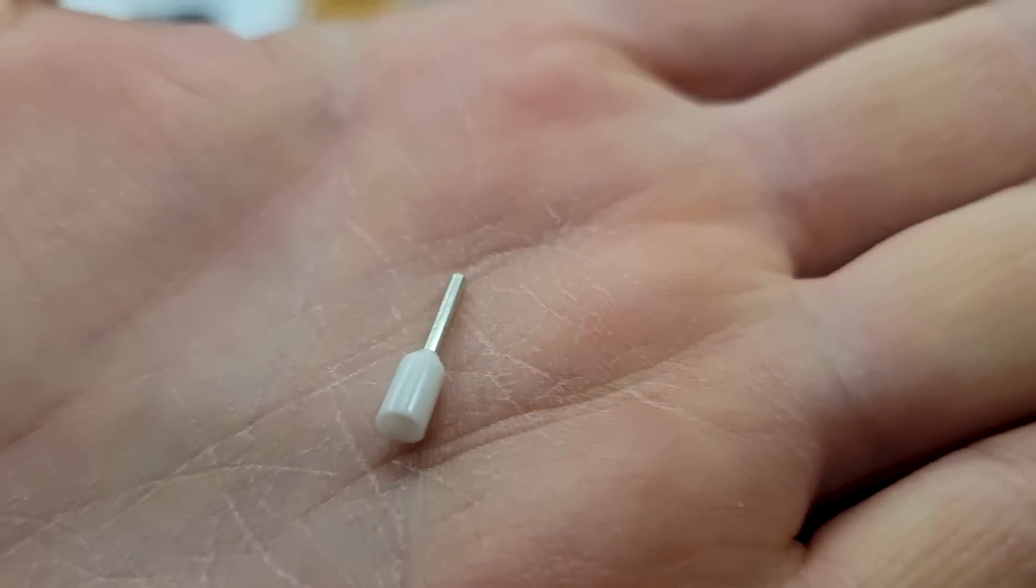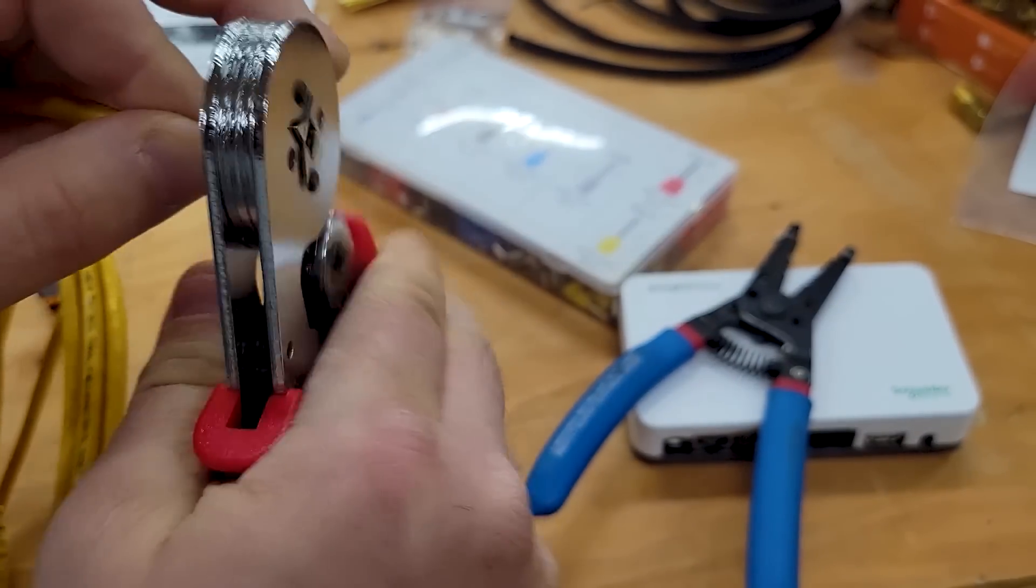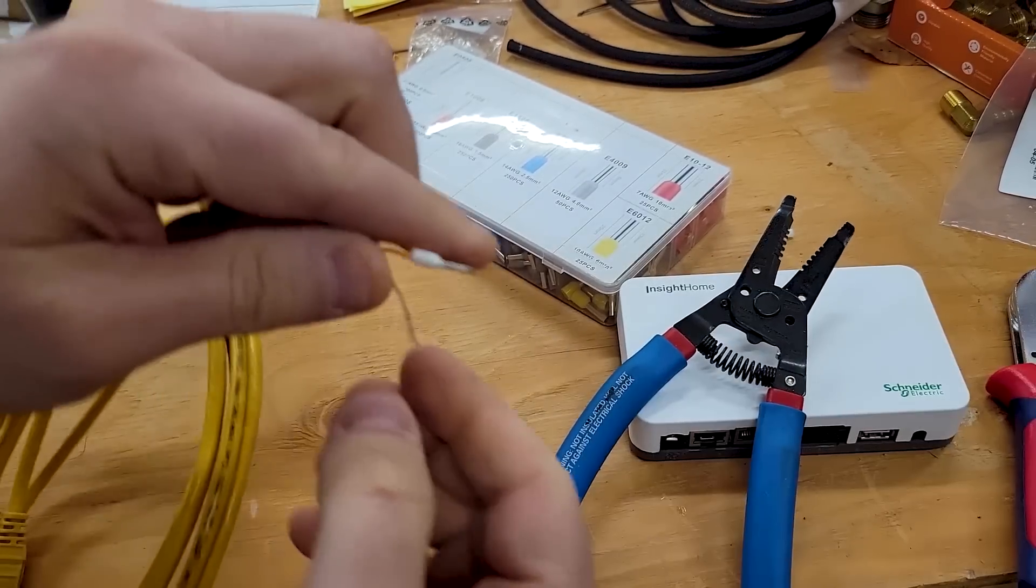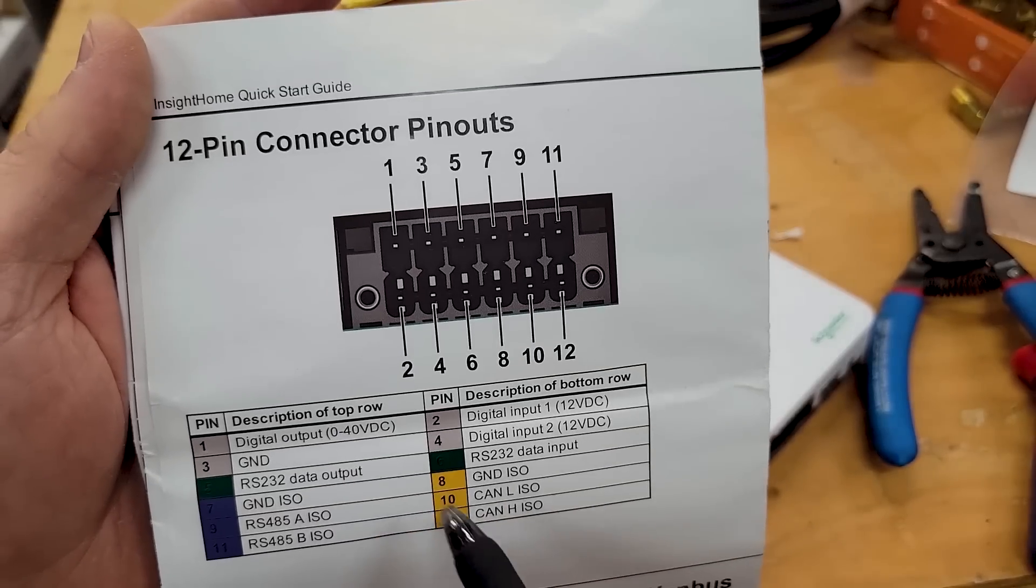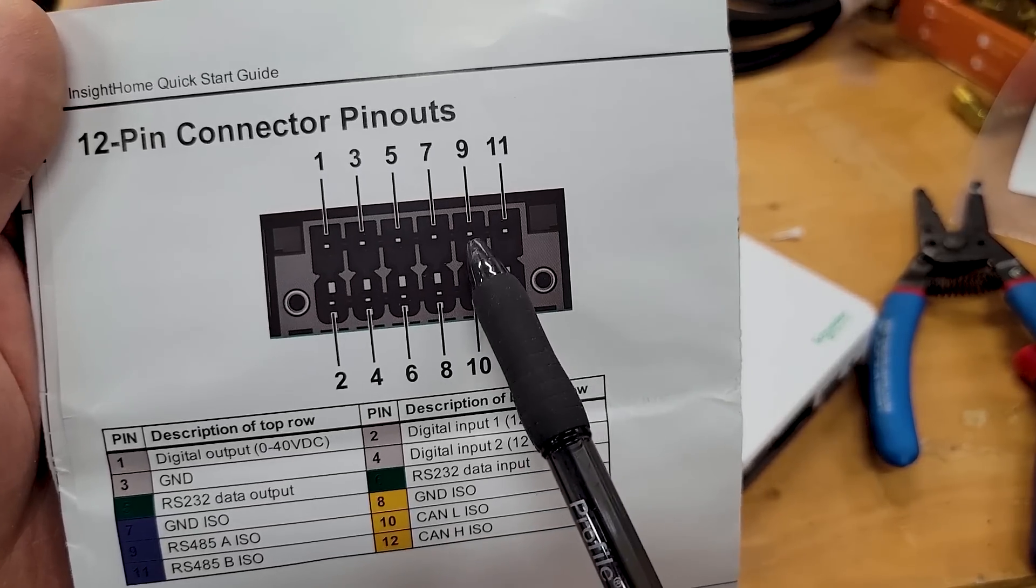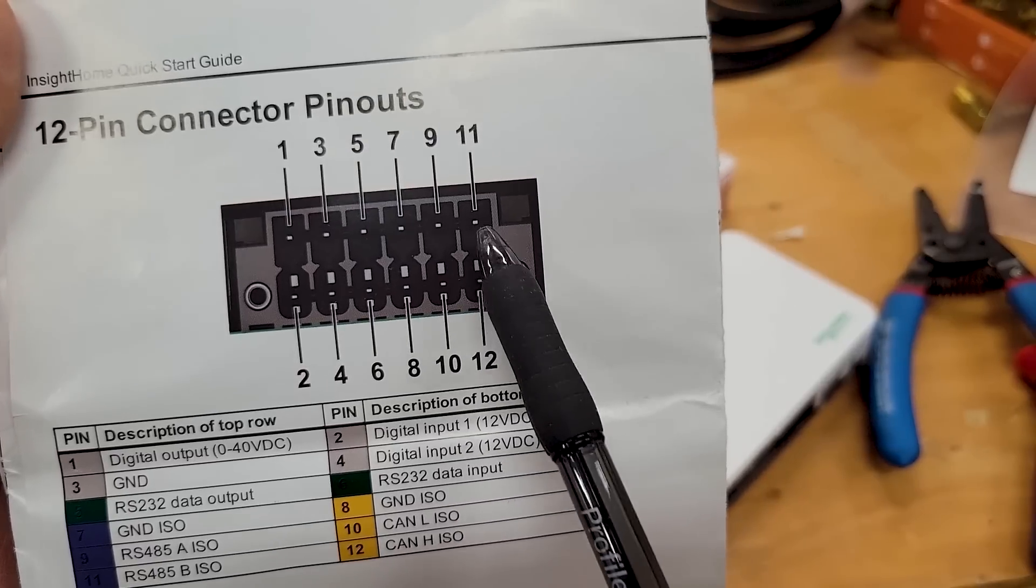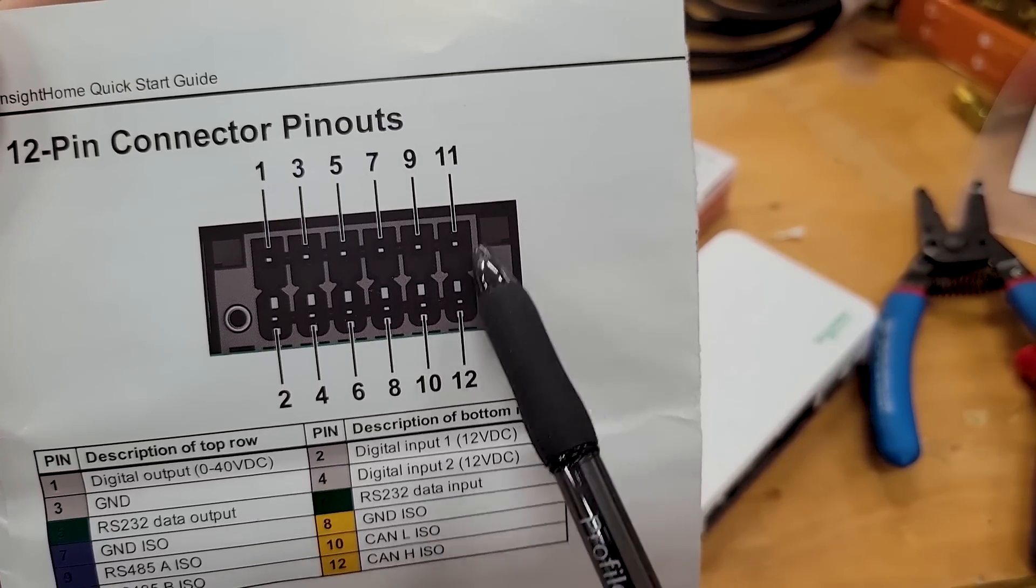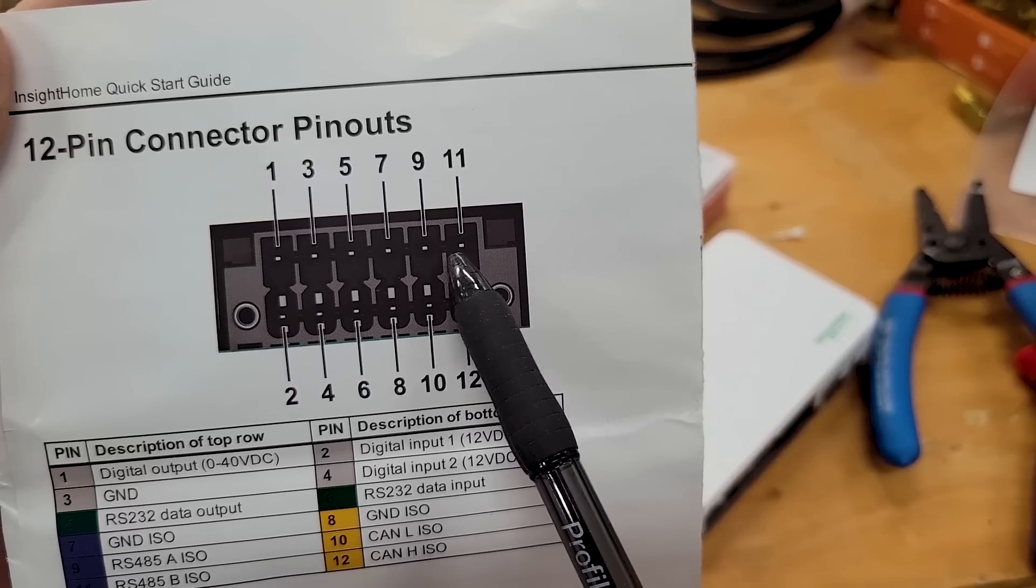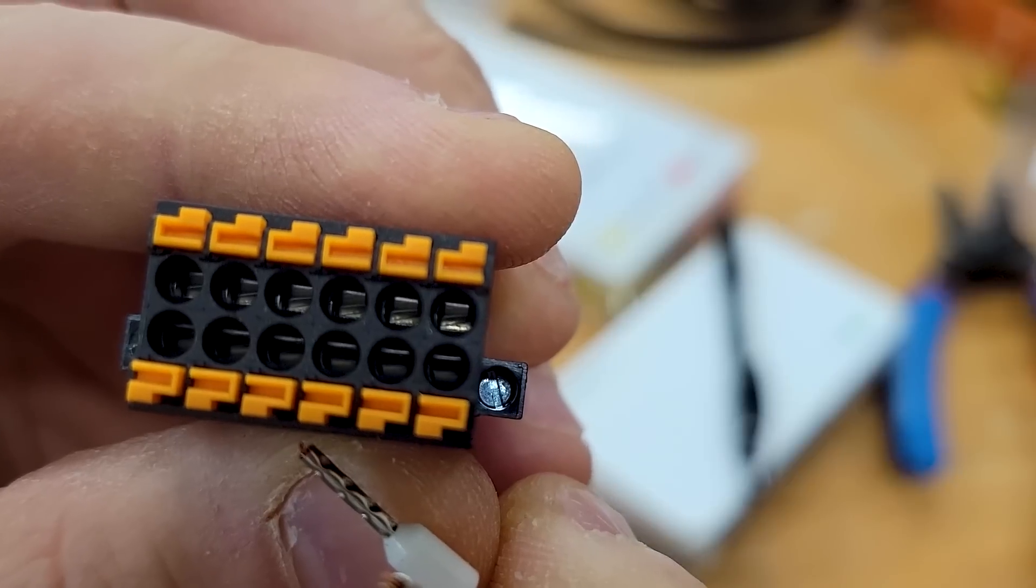This is a little tiny ferrule. This is the quick start guide that came with the Insight Home. Pin number 9 and 11 are the RS485. So those are the two that we want to use. And I think according to the video that I saw from Signature Solar, this one is going to have the white with an orange stripe. And then 9 is going to be the solid orange. So see the metal connector inside there? That's what we're going to push into until it clicks.